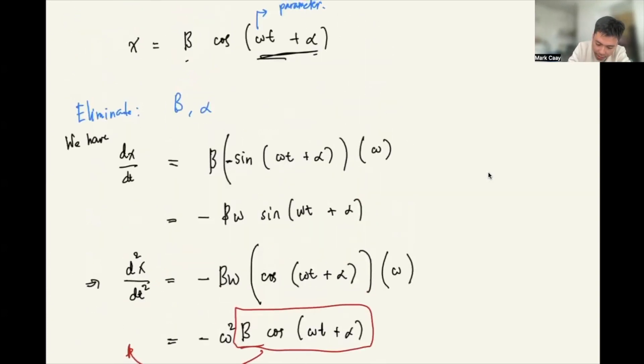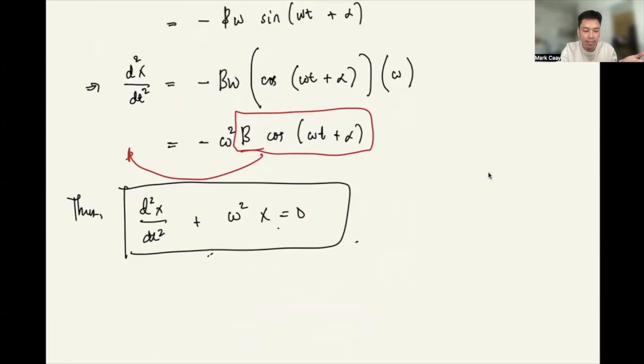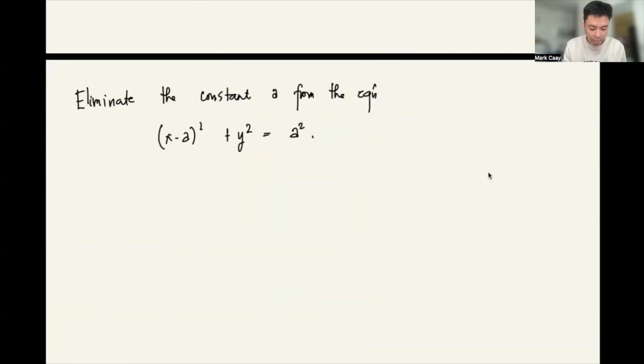So that becomes x equals zero. From this equation, we arrive at this. And in this case, we don't see B and alpha anymore. So therefore, this is the elimination of arbitrary constant. That's it. So we will have another example.